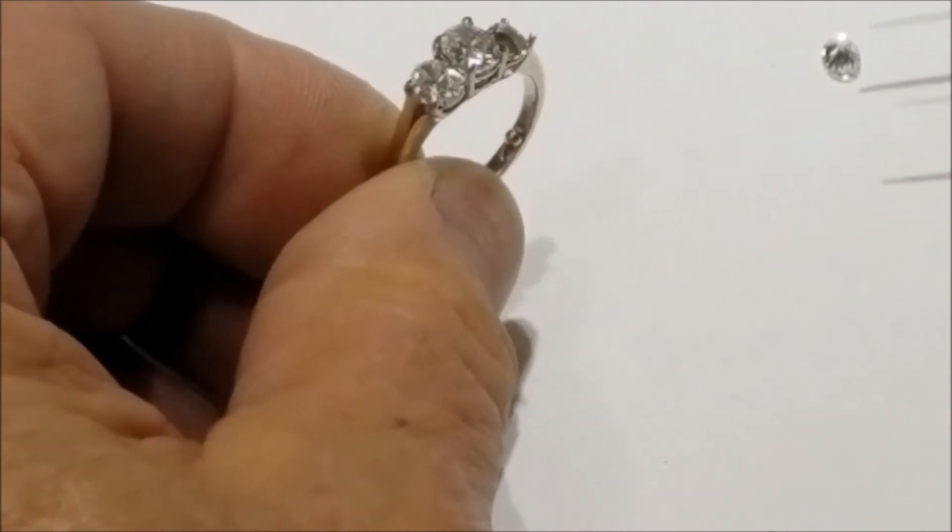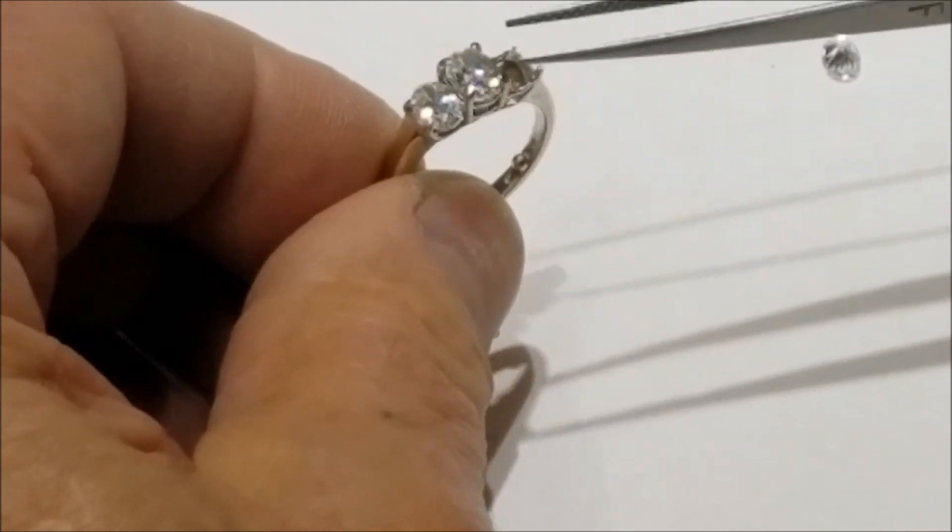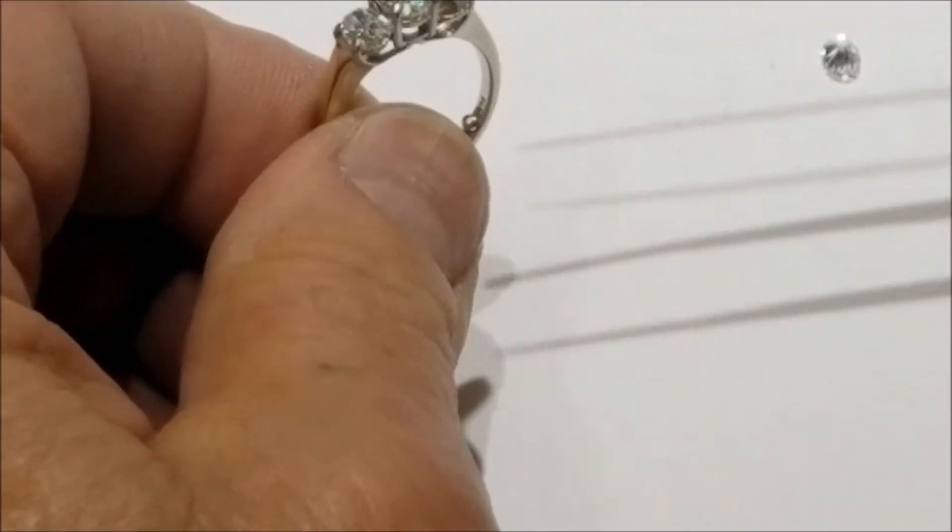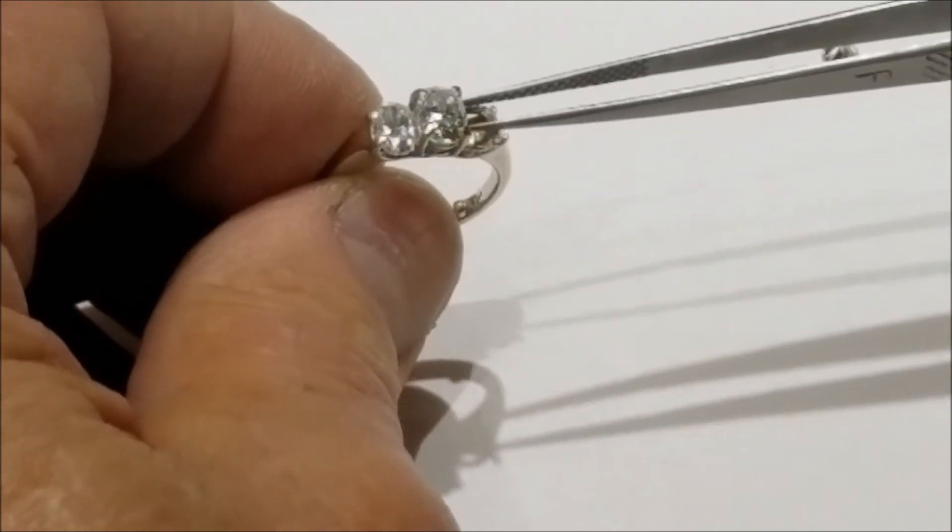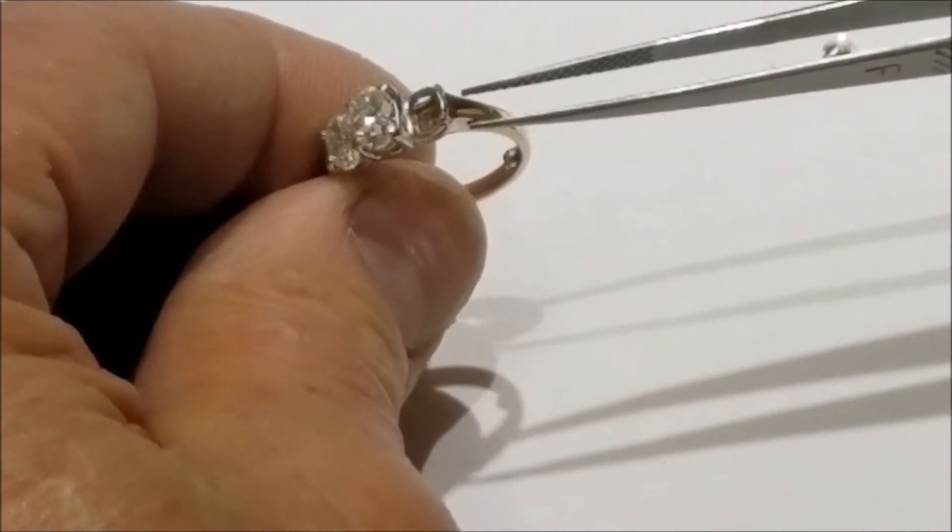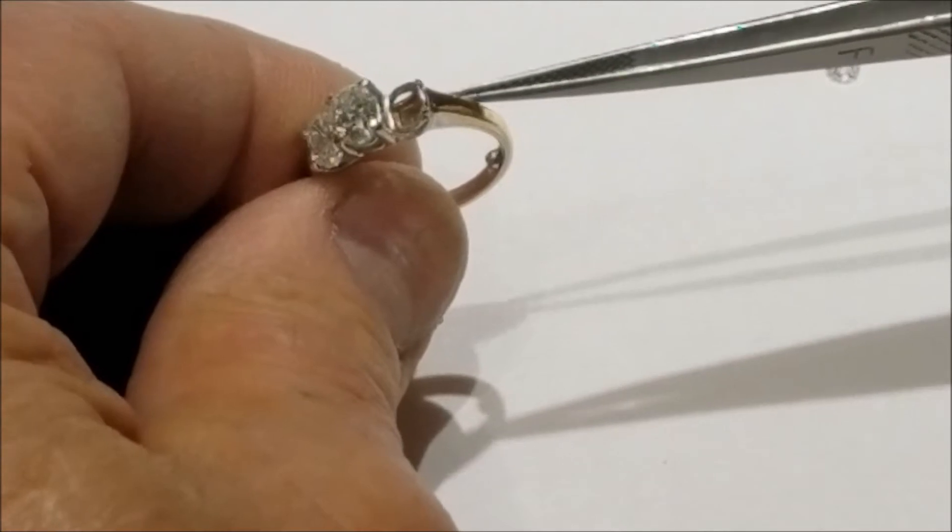A customer came in my store last week and said his girlfriend had lost the side diamond of her oval ring. The problem is the ring doesn't really want to hold another diamond in there since it's pretty badly worn, and also Nancy, the girl, would like to have a white gold ring with some diamonds on the sides.